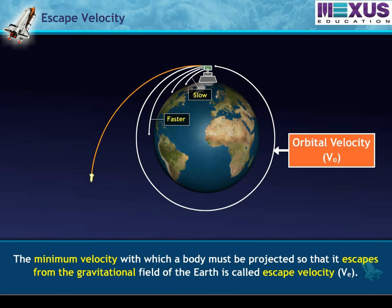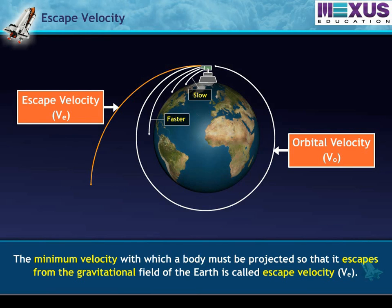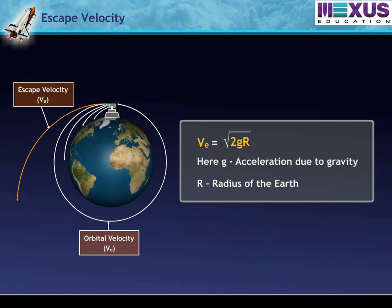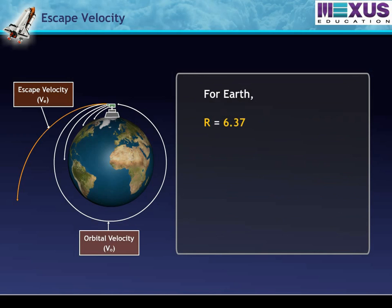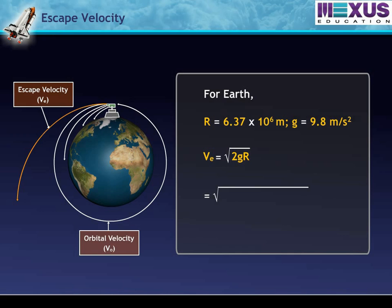The minimum velocity with which a body must be projected so that it escapes from the gravitational field of the Earth is called escape velocity. Escape velocity VE can be calculated using the formula: for Earth, radius r equals 6.37 × 10⁶ meters and acceleration due to gravity g equals 9.8 m/s². So escape velocity VE equals the square root of 2gr, which equals the square root of 2 × 9.8 × 6.37 × 10⁶, which equals 11.2 kilometers per second.